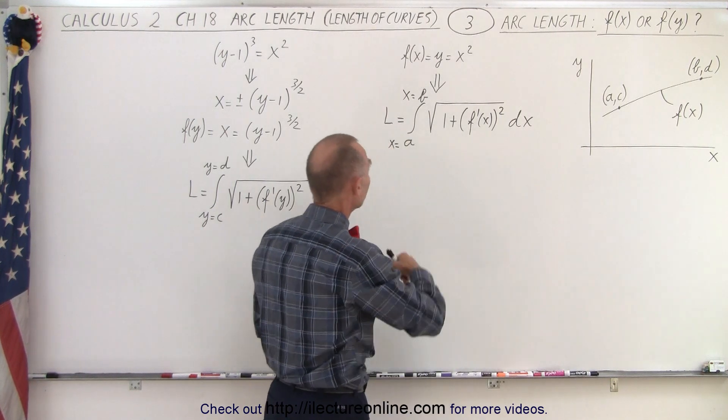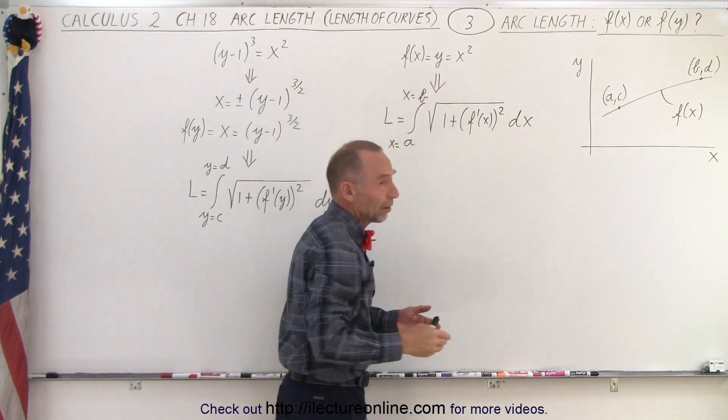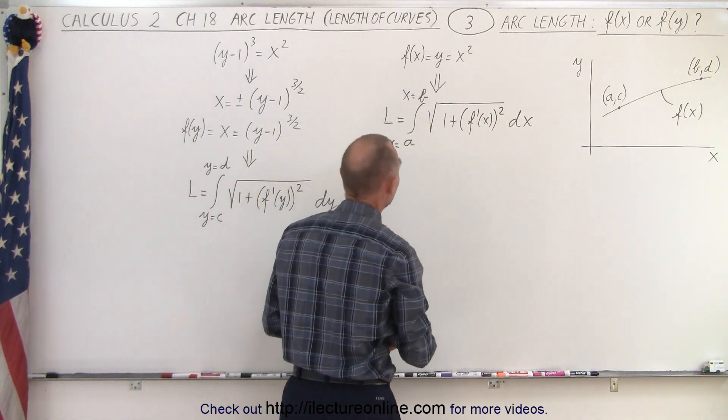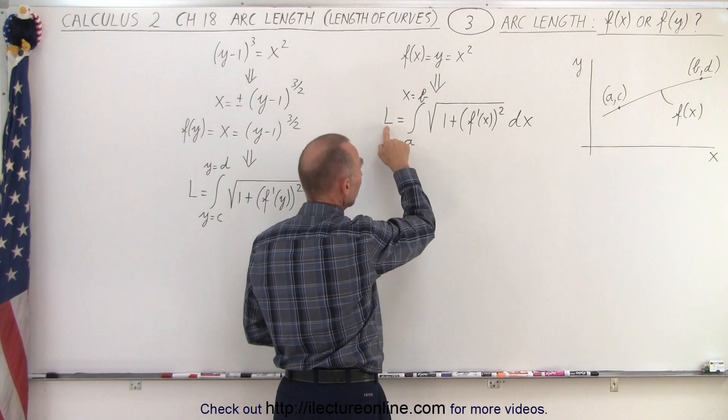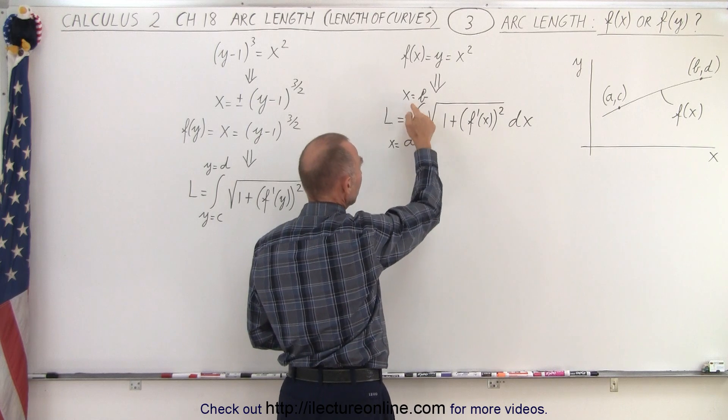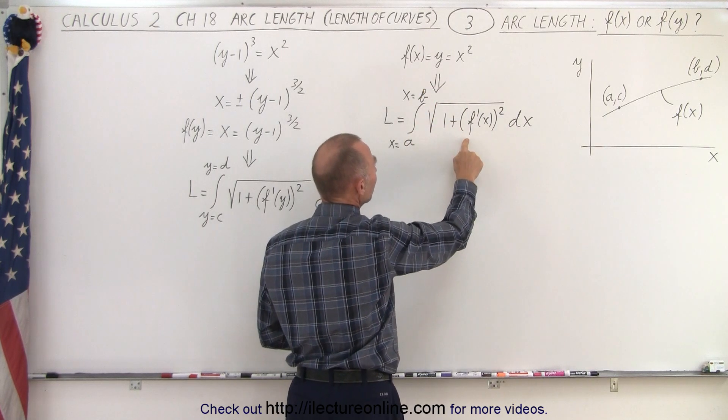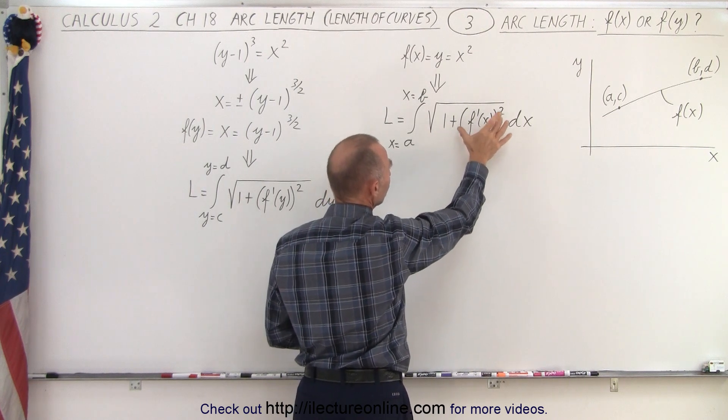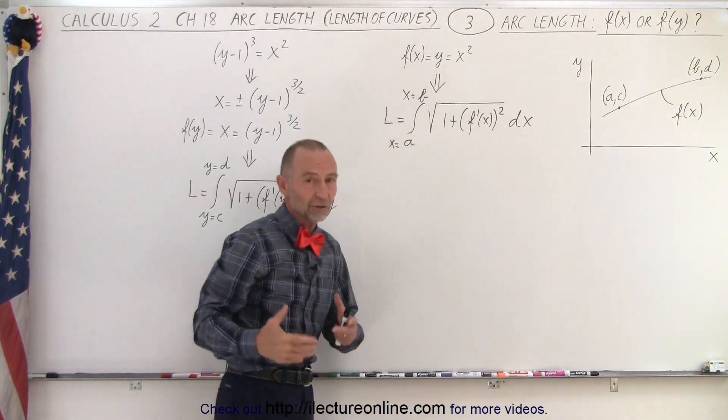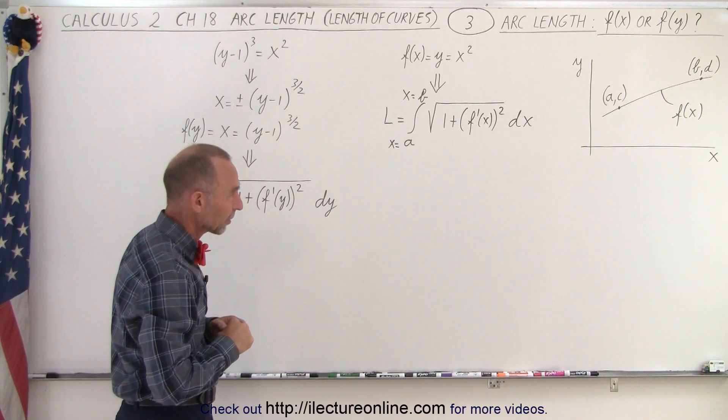Now if the function is something like this where f of x equals y which is equal to x squared, then it's pretty easy to simply call this a function of x. And then the solution for the arc length can be defined as the integral from x equals a to x equals b, so we use x limits of the square root of one plus f prime of x quantity squared times dx. Of course, f prime is the derivative of my function of x.